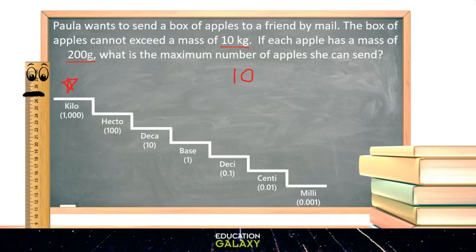I need to move down to the base step which is one, two, three steps away. So I need to move my decimal point one, two, three spots to the right. That would make it 10,000 grams.